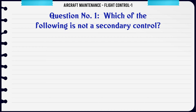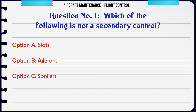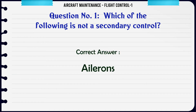Which of the following is not a secondary control? A. Slats. B. Ailerons. C. Spoilers. D. Airbrakes. The correct answer is Ailerons.